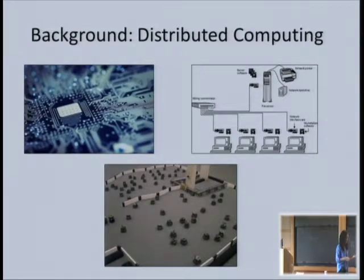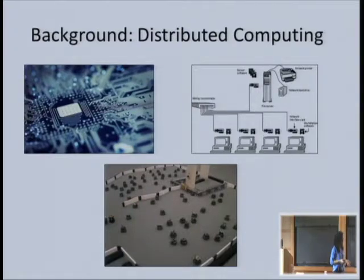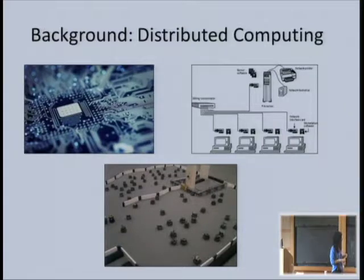This is a really hot research area now. One thing they can do, for example, is try to form a structure—you throw them out there and you tell them to form a circle or something like that. Or try to contain a spill where every node can measure the degree of contamination in its local area. This is actually a platform built by James McClarkin in his PhD at MIT.